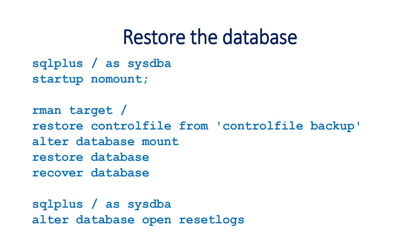To see the steps in detail: first you will start the database in nomount mode, then connect to RMAN, restore the control file, alter the database in mount mode, restore the database, recover the database, and finally open the database in resetlogs mode. At that point, if everything goes fine, your database will be present on your target server and the cloning is complete.